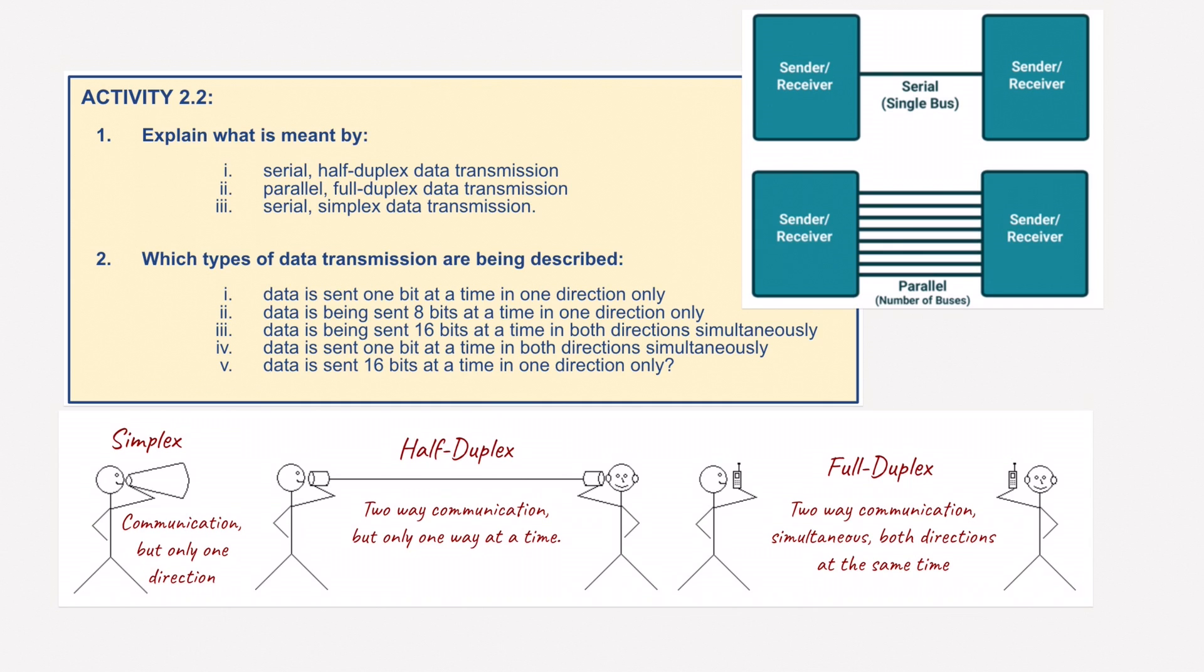And finally, serial simplex data transmission. Well, serial and simplex, we've got one wire, one bus, and one direction for the communication. So the sender can only send information to the receiver using this single wire. Great, as we said before, for long distances. Okay, so that is question one complete.